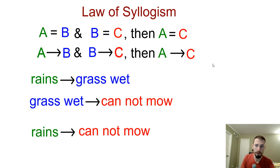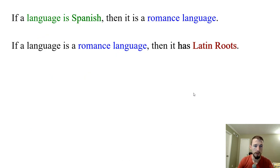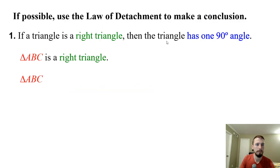So kind of showing it with symbols, and then this is kind of what it looks like in the real world, law of syllogism. So if a language is Spanish, then it is a romance language. If a language is a romance language, then it has Latin roots. So what can we conclude? So we can conclude that Spanish has Latin roots, because these two matched up, and we can skip across and go straight over. So if it's Spanish, then it has Latin roots.